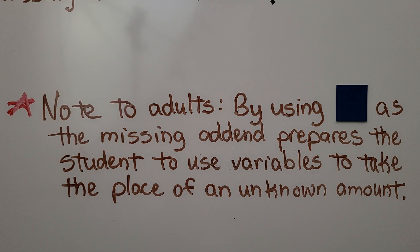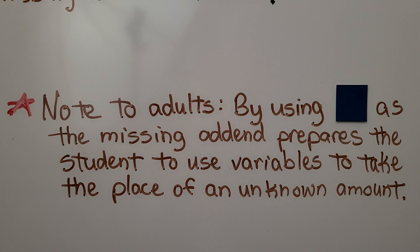This is a note to the adults. By using the square as the missing addend, it prepares the student to use variables to take the place of an unknown amount. So it's very important to use the square in this lesson.